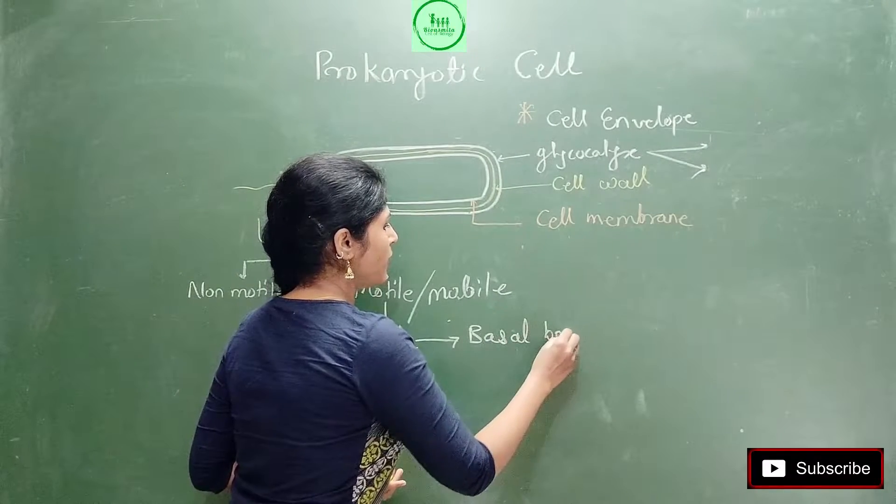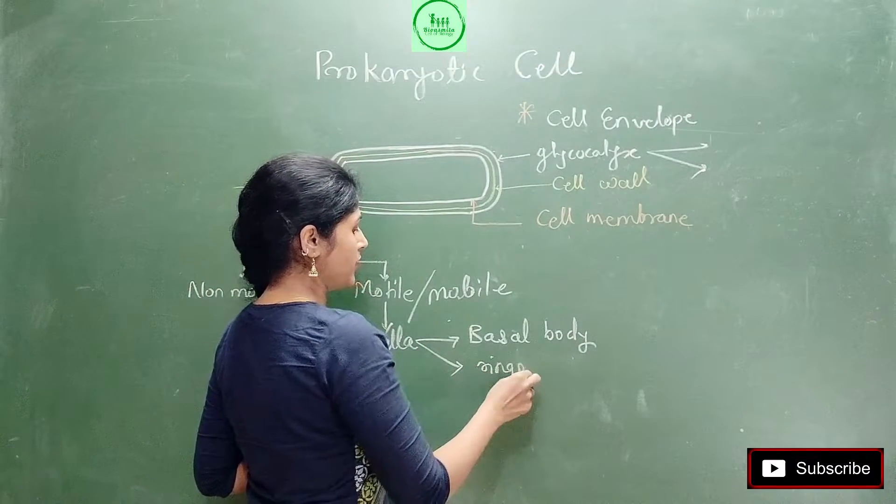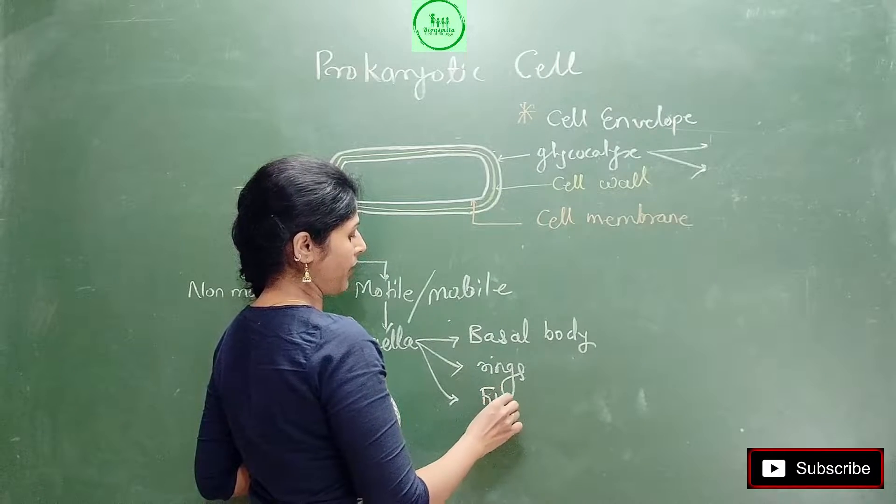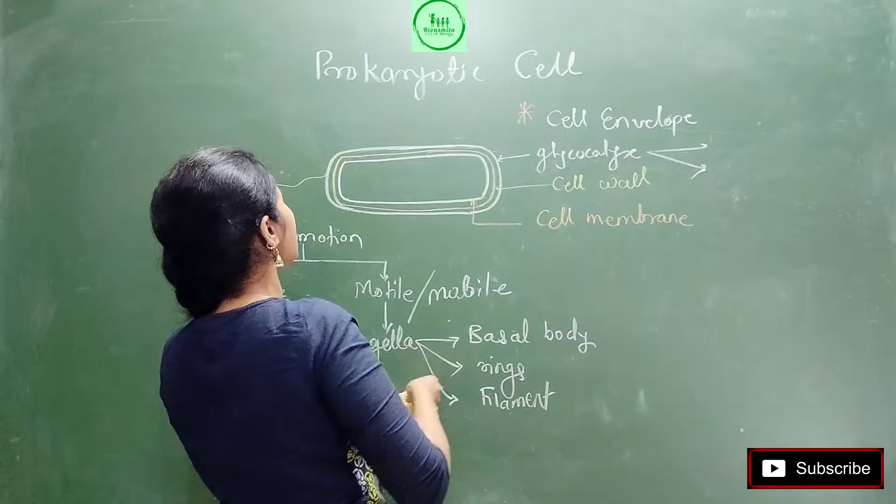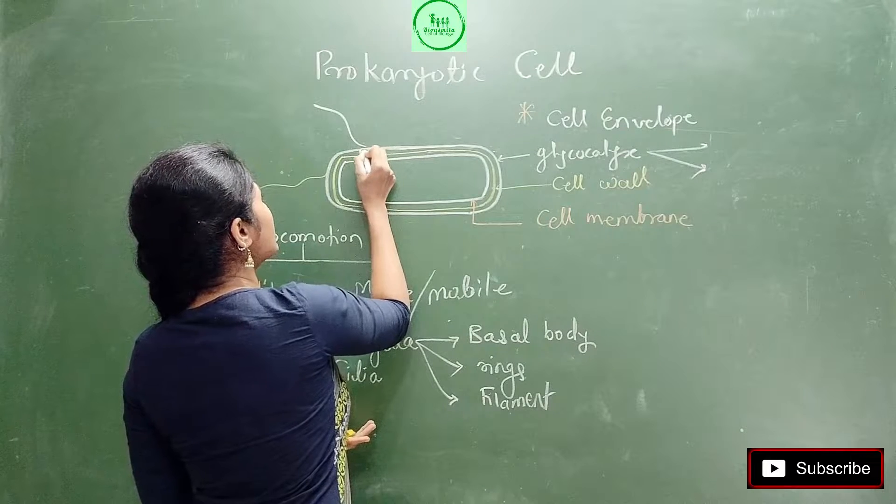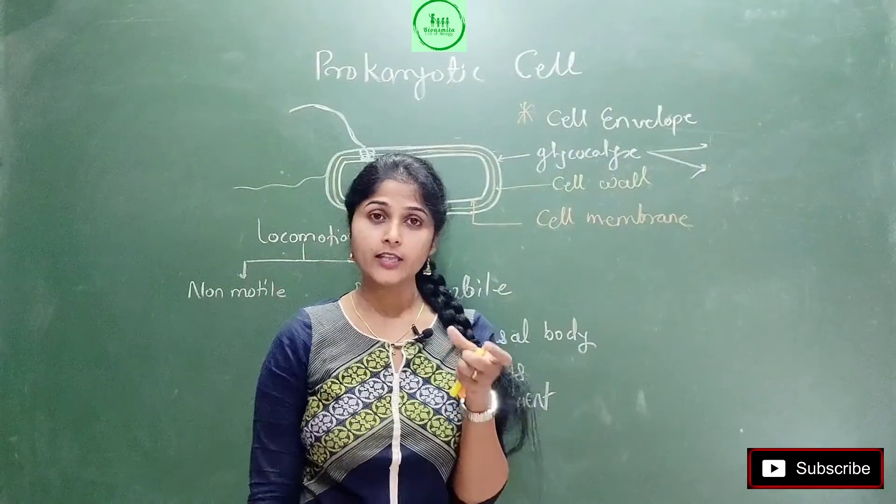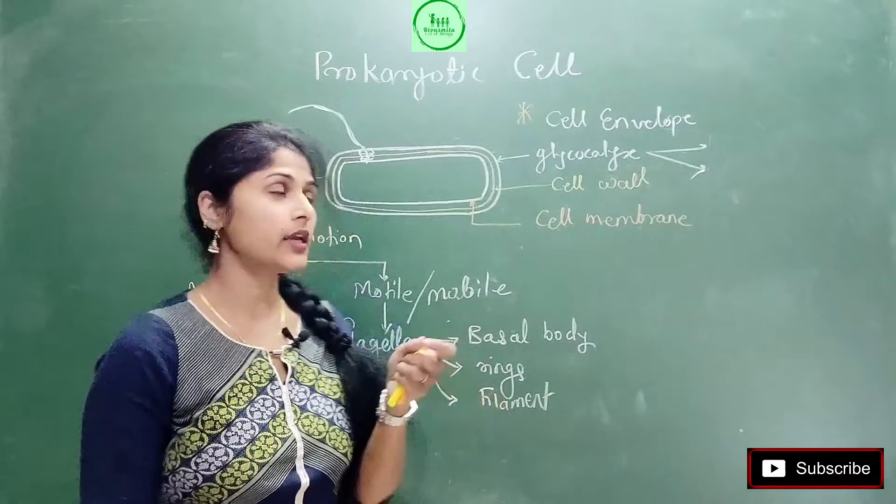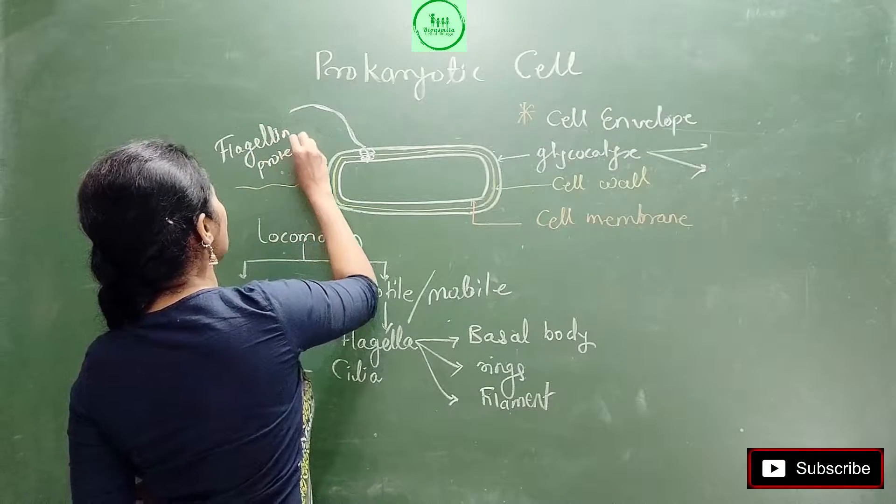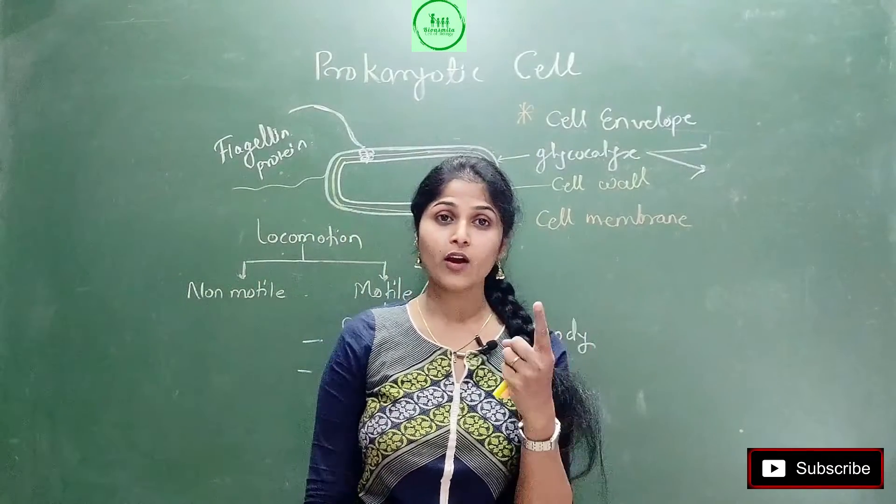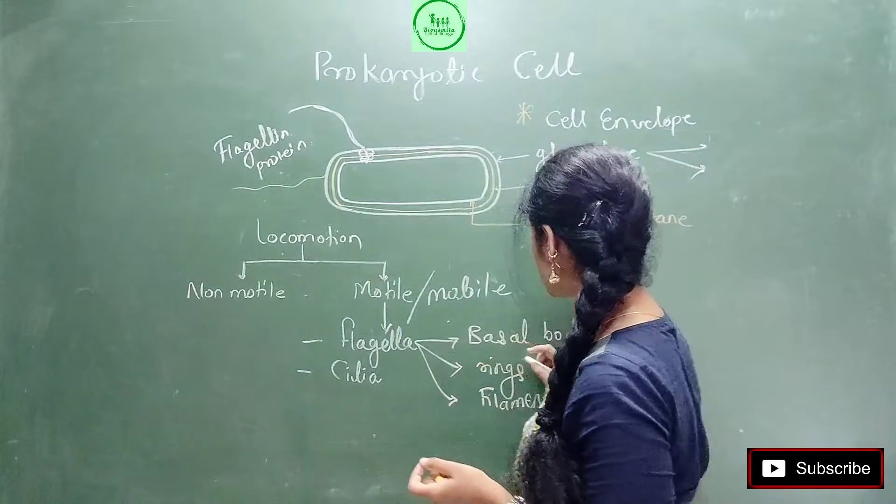So the basal body is here, and from here basal projection occurs. This flagella starts from the cell membrane. The flagella is made up of a special protein which is called flagellin protein - very important for your MCQs. When flagella does forward movement, it needs force. This force is generated by the basal body.